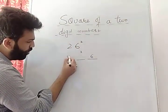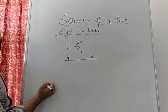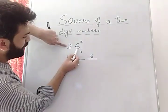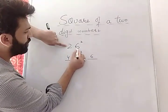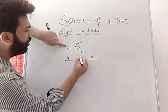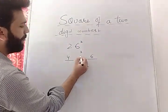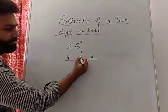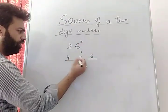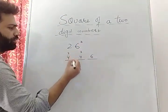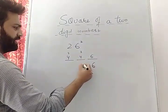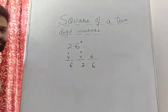What is 2 squared? It is 4. Now multiply the two digits: 2 into 6 into 2, which is 12 into 2 = 24. Write 4, carry 2. The answer is 6, 7, 6.